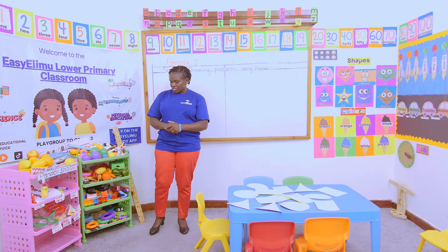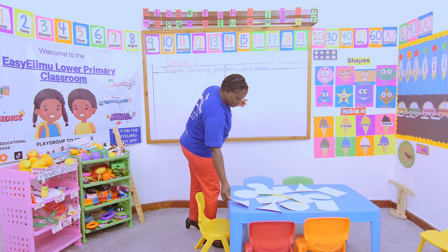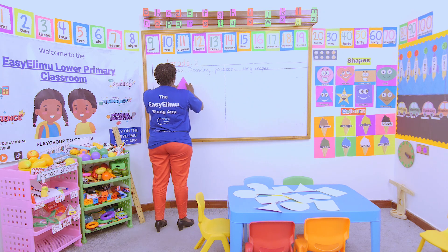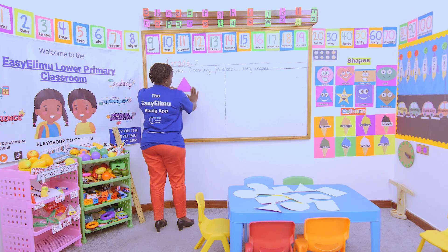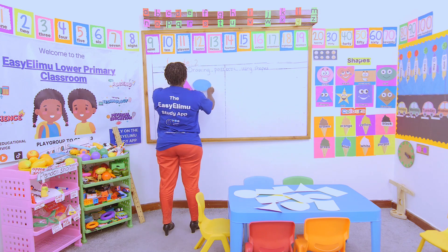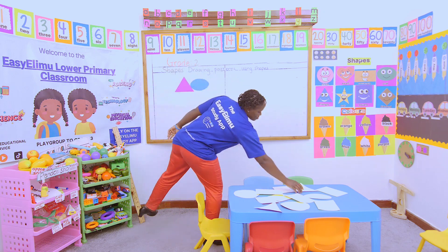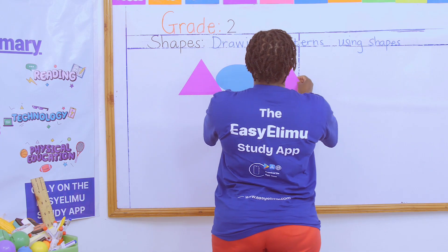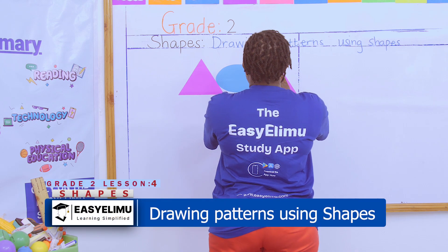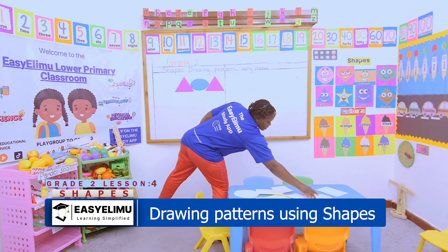If I decide to take this triangle like this and put it there, then I decide to put there an oval. Then I decide to put there again the triangle, and then again the oval.